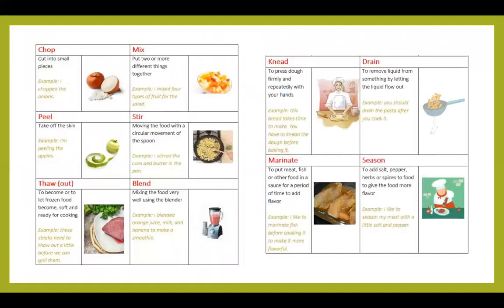Other verbs. Chop — cut into small pieces. Mix — put two or more different things together — mezclar. Peel — take off the skin — pelar. Stir — moving the food with a circular movement of the spoon — revolver. Thaw — to become or to let frozen food become soft and ready for cooking — derretir.